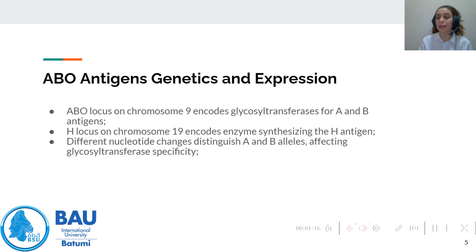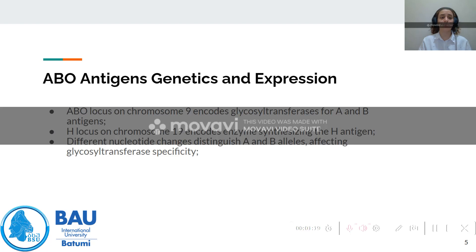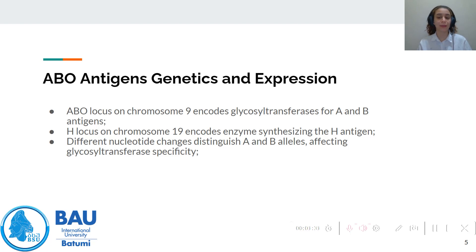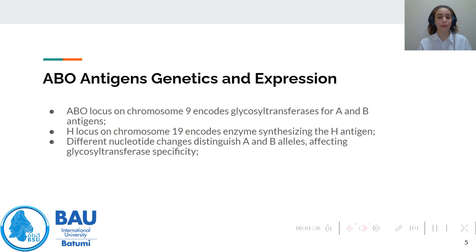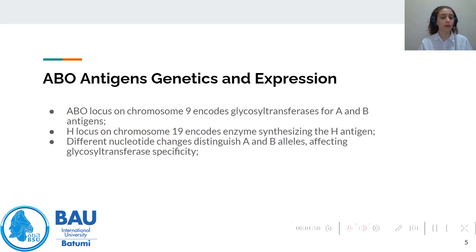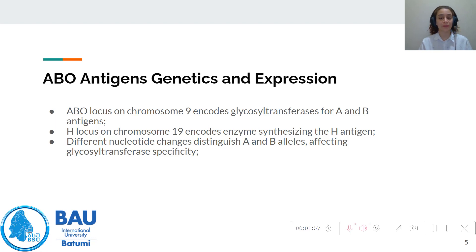Now about the genetics and expression of these ABO antigens. The ABO locus is present on chromosome 9 and is responsible for the glucosyl transferases A and B, which are needed for the expression of antigen A and antigen B. The H antigen, which is the base of both the A and B antigens, is present on the H locus on chromosome 19. Different nucleotide changes distinguish between the A allele and the B allele, affected by glucosyl transferase specificity.